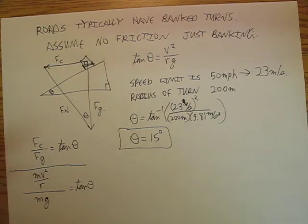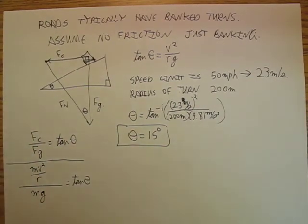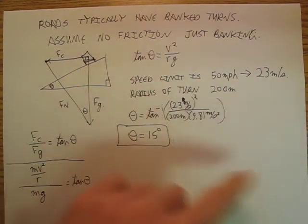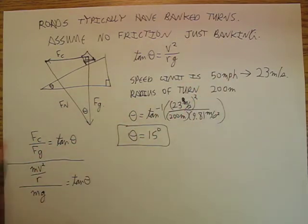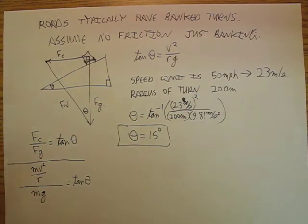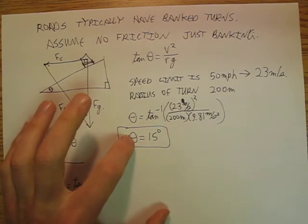And, of course, the speed limit for the interstates is 65 miles an hour, so they would probably have even a little bit more banking. But, this is banking handling everything.